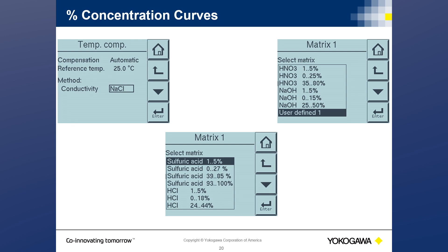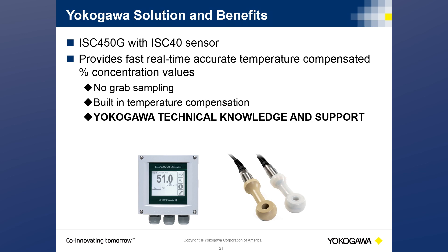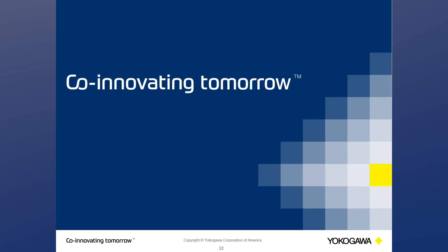Online conductivity process analyzers allow users to benefit from fast, real-time concentration readings. You no longer need grab samples, manual interpretation, or temperature matching to a calibrated device. Yokogawa's inductive conductivity sensor uses one sensor to cover any chemical with any concentration range — because all chemicals have their own conductivity readings, you simply tell the analyzer which table to reference. Yokogawa's technical support team is here to help you solve any percent concentration challenges. Thank you very much for your time — let us know if you have any questions.